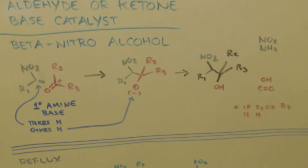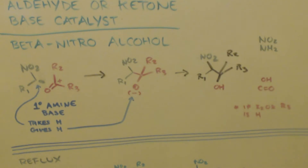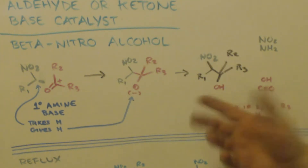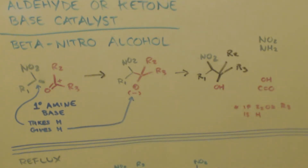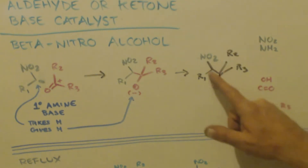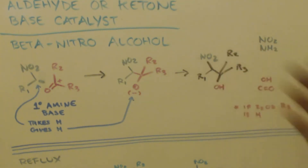So far this reaction is pretty much spontaneous — you can just mix all this stuff together, stir it for a while, and you'd have your product. As soon as you add the base you can see a color change: it'll start turning yellow, then orange, then red. No heat is required; just add it and stir. Now, how do you get the double bond?